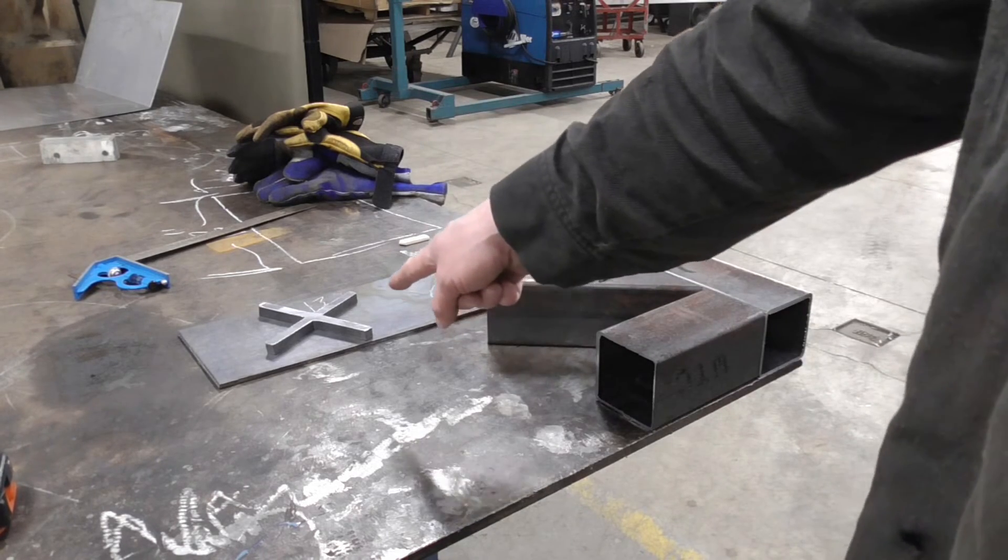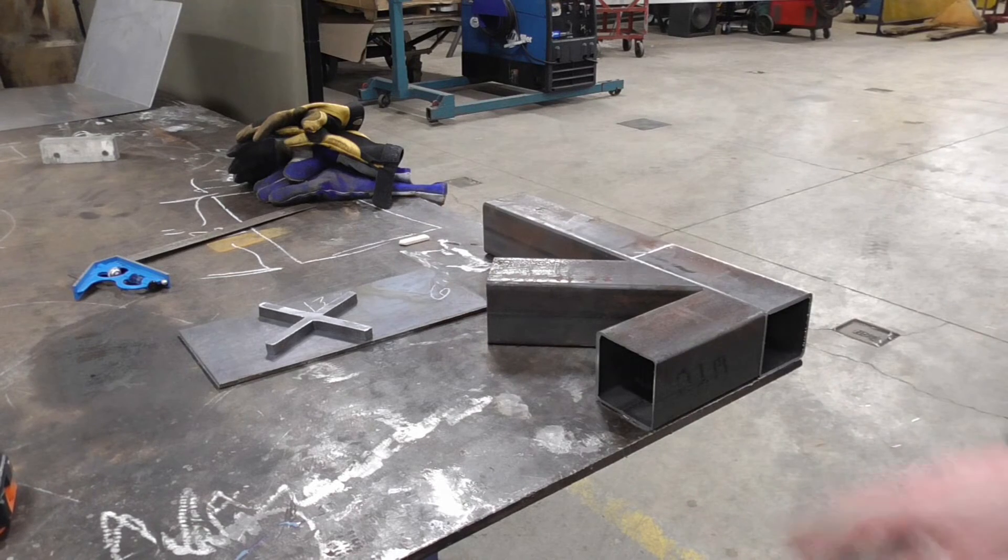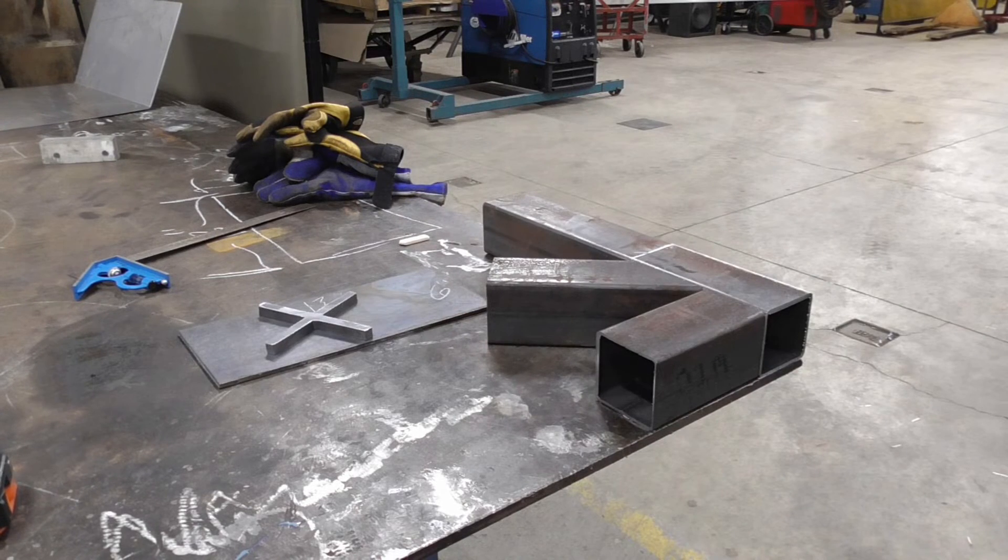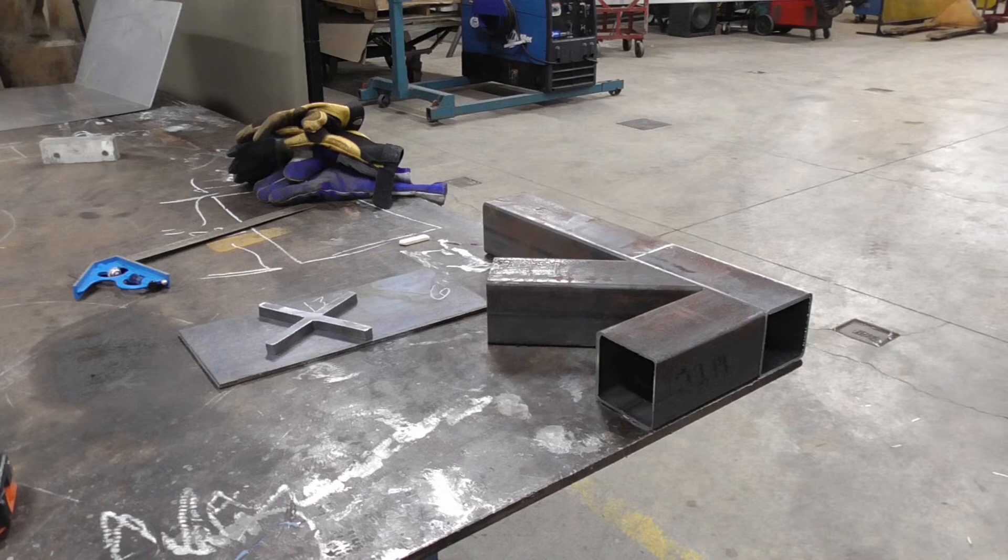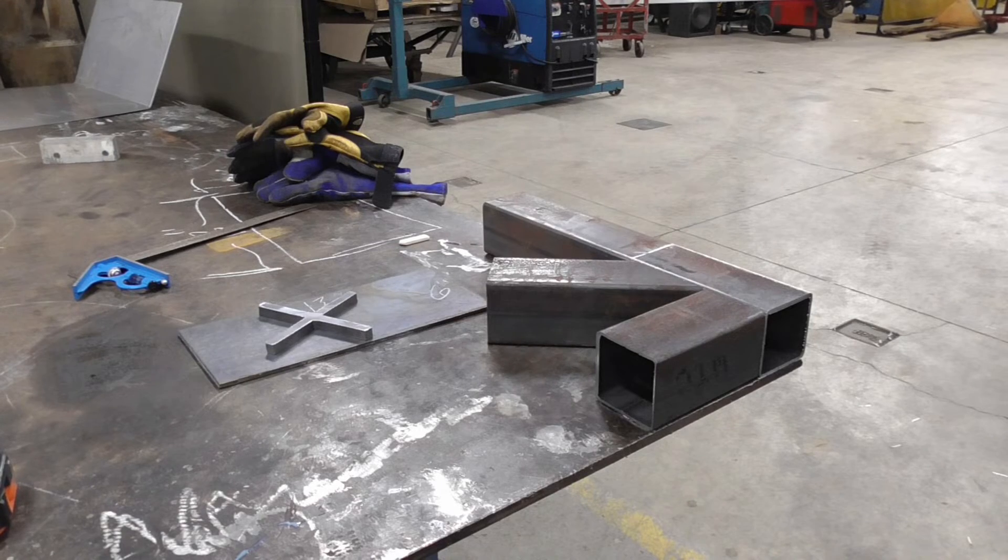What you can see right there is our X, whatever you want to call it, to the top, the plate to the bottom. So we're into phase plasma, and then we will be into phase fabricate.